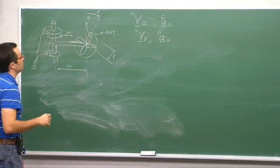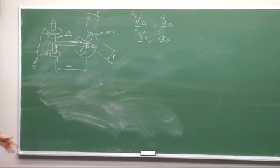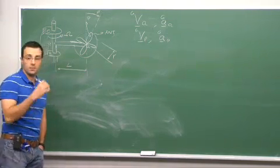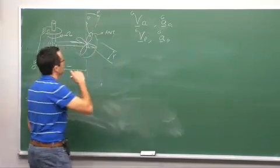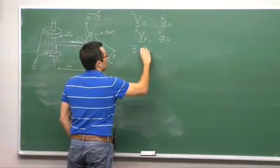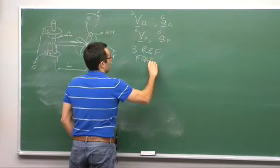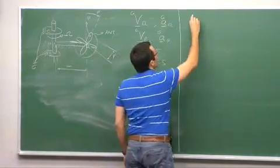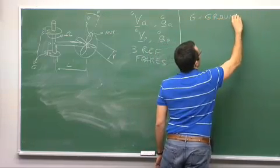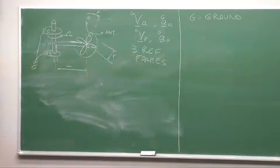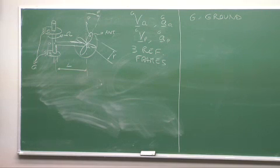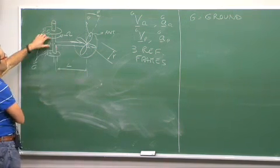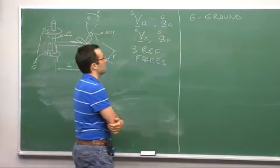OK, you help me do this. I start from scratch — how many rotations do I see? Two. So what's the next step? Reference frames. How many do I need? Three reference frames. Let's define these reference frames. One is obviously the ground. What is the next one? The shaft-arm assembly — this is rigid — let's call it A. And then the last one is the fan, let's call it B.